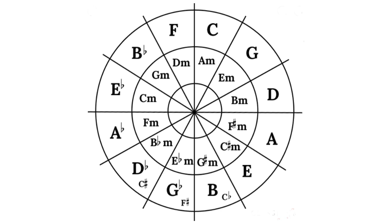For the flats we start on B flat and go anti-clockwise. So remember F major has one flat which is B flat, B flat major has two flats which are B flat and E flat and this carries on for the flats.